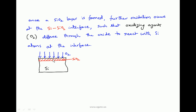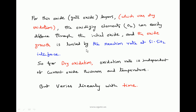Further oxidation occurs at the silicon–silicon dioxide interface — oxygen atoms diffuse through the oxide and interact with silicon atoms at that interface. Thin oxide, also called gate oxide, is used to form the MOS capacitor and sits just below the polysilicon. For thin oxide, the oxidizing elements can easily diffuse through the initial oxide, and the oxide growth is limited by the reaction rate at the silicon–silicon dioxide interface.